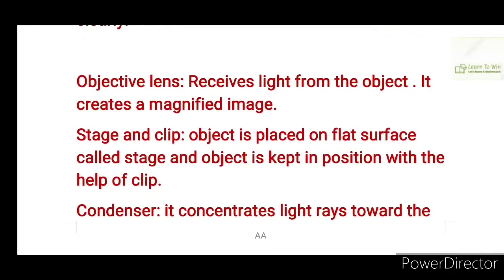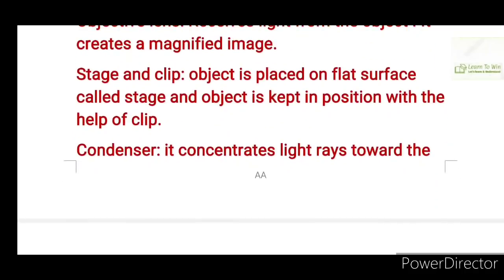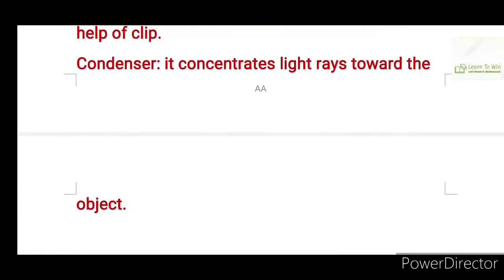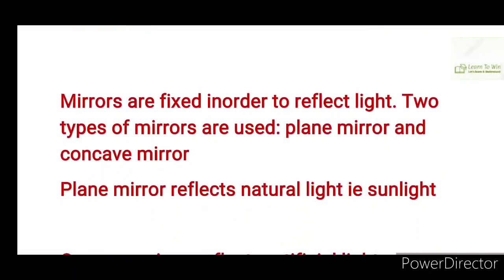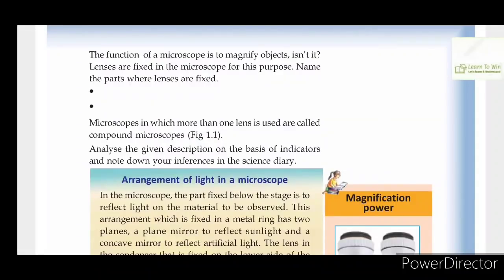The object is placed on the flat surface called the stage. The object is kept in position with the help of the clip. The condenser concentrates the light rays towards the object. The light is reflected towards the condenser and the object. The function of a microscope is to magnify objects.